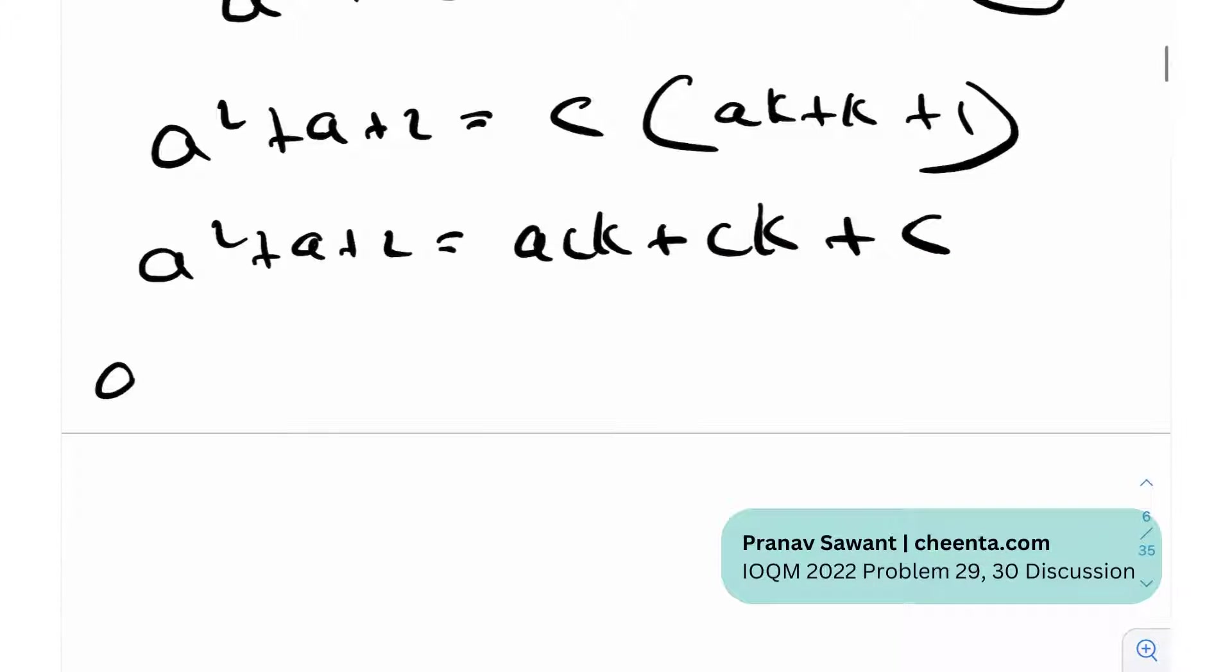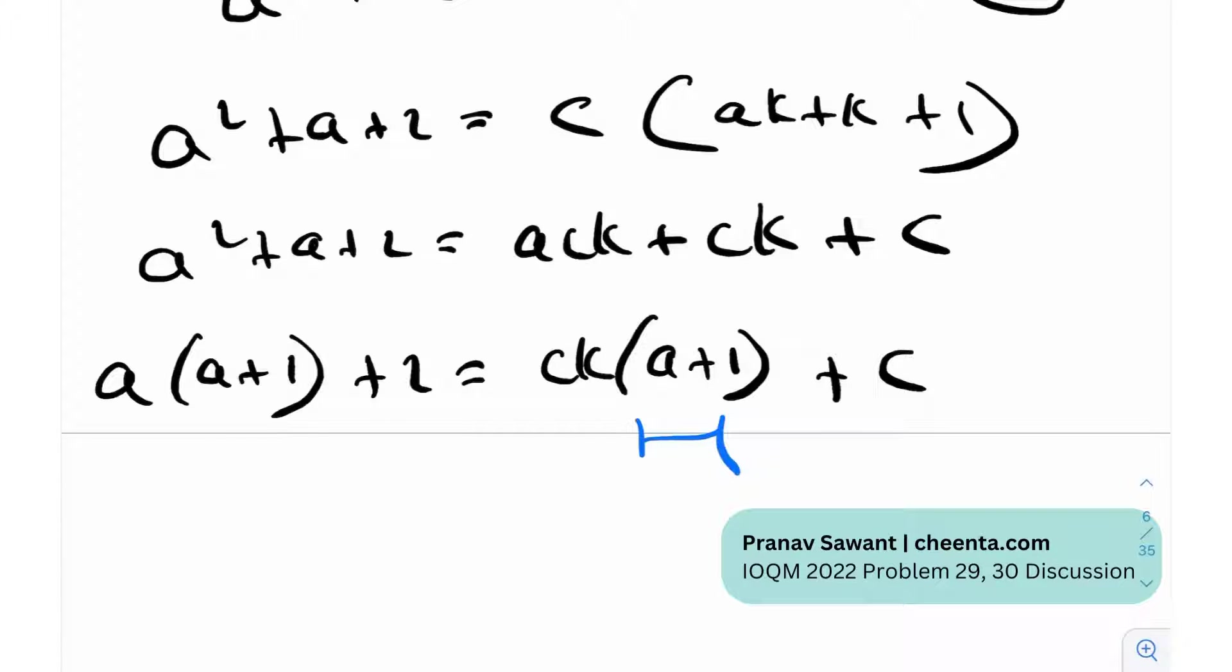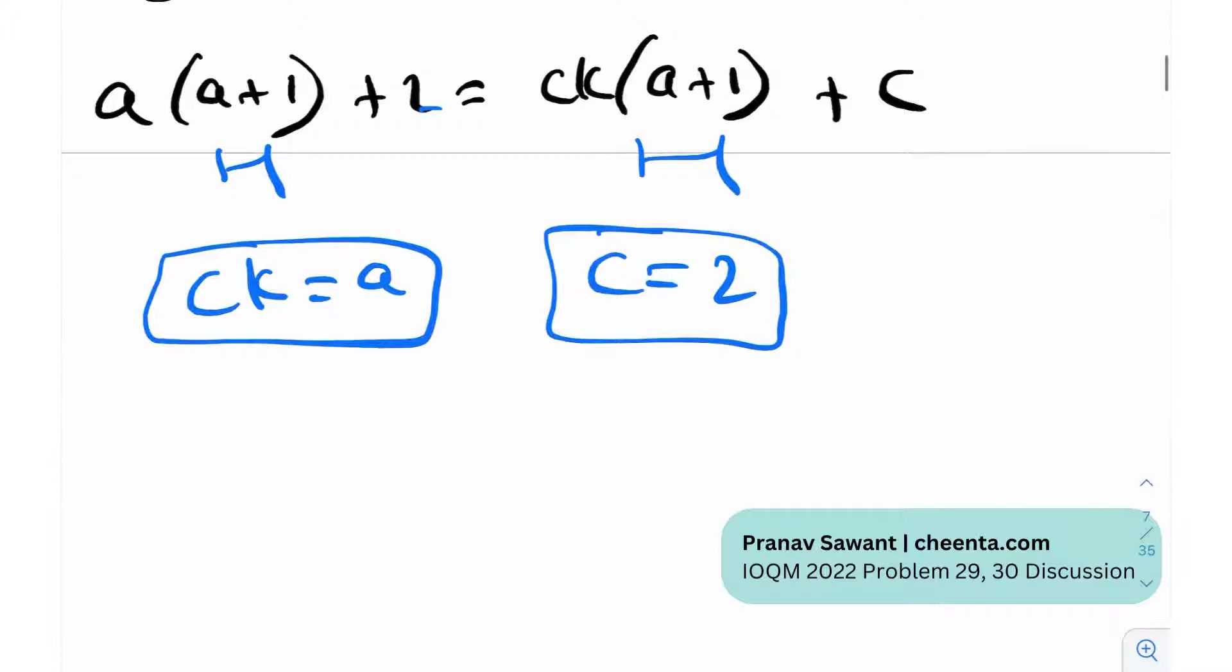Now all we really need to do is just compare the left hand side and the right hand side. You see this (A+1) over here, (A+1) over here, which essentially means that CK is equal to A, right, standard method of comparison algebra, and of course C is equal to 2. Once we have C is equal to 2, we can write A is equal to 2K, and there is another interesting thing we've just figured out. So therefore essentially A is even. A is equal to 2K is even, or rather K is equal to A by 2.